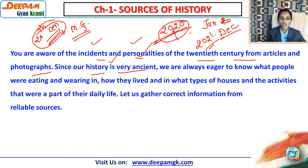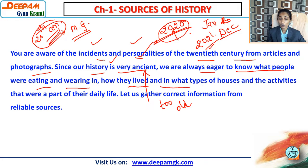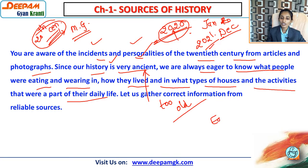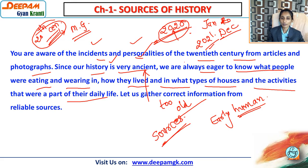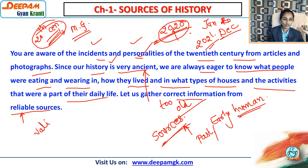Since our history is very ancient, we are always eager to know what people were eating and wearing, how they lived, what types of houses they had, and the activities that were part of their life. If someone talks about early humans, questions arise in our mind about what they ate, wore, and lived in. So we use sources — whatever sources indicate the past and history — to gather correct information from reliable material sources.